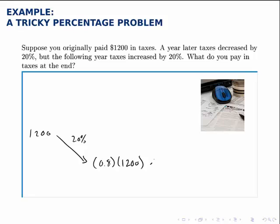And in the second year, it goes up by 20%. So now we have 120% of this amount. Well, 0.8 times 1,200 is 960.